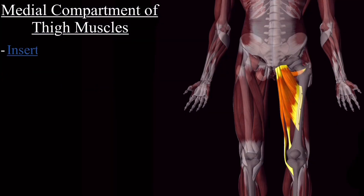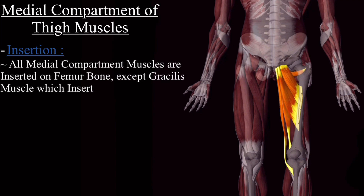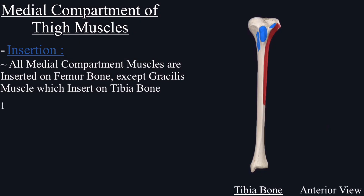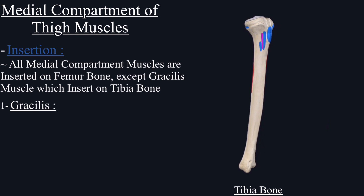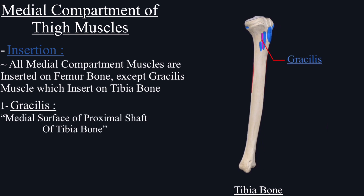Next is the insertion. All medial compartment muscles are inserted on the femur bone except the gracilis muscle, which is inserted on the tibia bone. The gracilis muscle is inserted on the medial surface of the proximal shaft of the tibia, between the insertions of the semitendinosus muscle and the sartorius muscle.